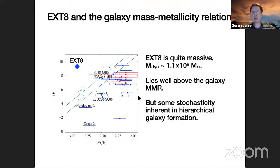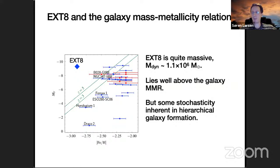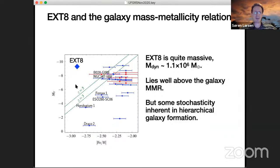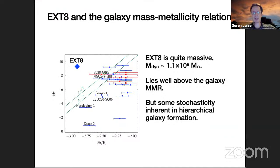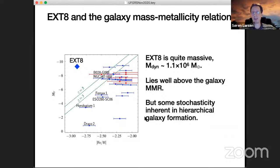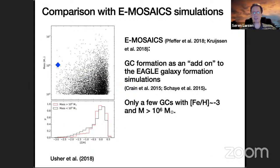If we plot EXT8 on top of the earlier figure, it falls in the forbidden region of the diagram. That is the conundrum — you really wouldn't expect based on the galaxy mass-metallicity relation that it should be possible to form objects like that. Of course these are mean relations and there may be some stochasticity. It would be good to have larger observational samples of clusters, but also theoretically, not just comparing with mean relations but using simulations that give better statistics.